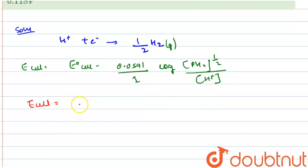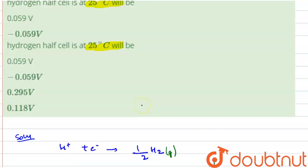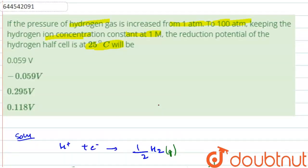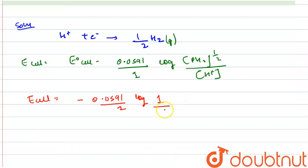E of cell equals minus 0.0591 upon one into log of pressure of H2 which is one atm, and concentration of H+ is one molar. We know that log one is zero, so E of cell is equal to zero.